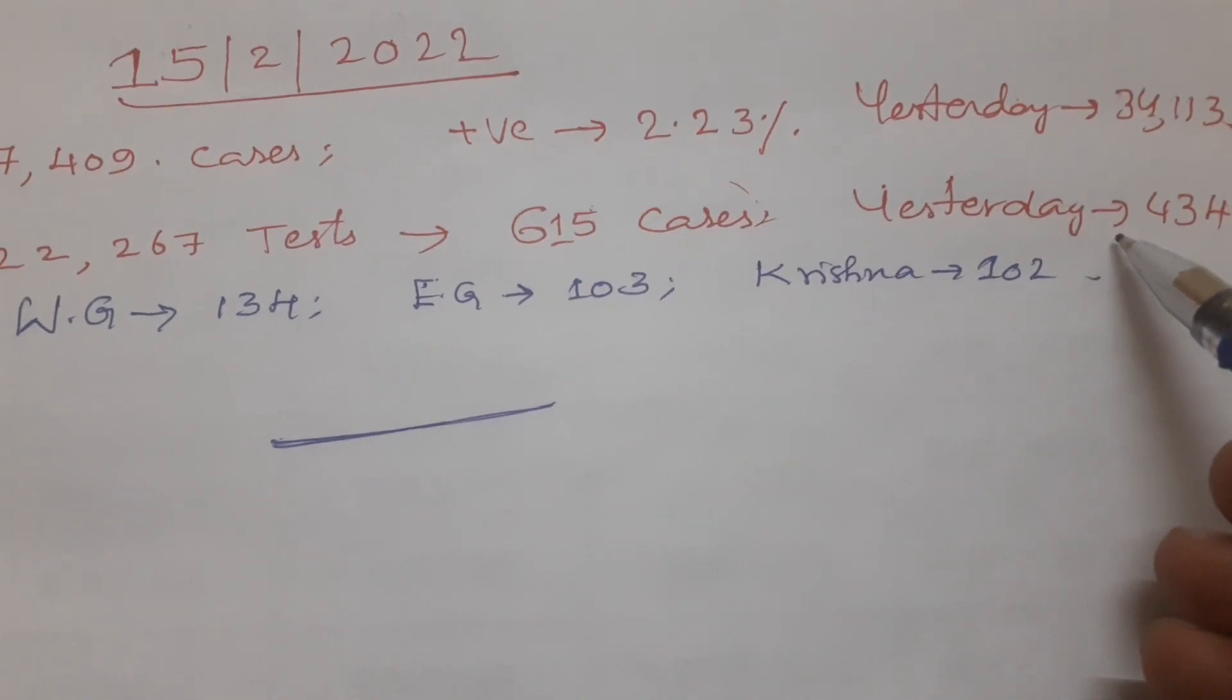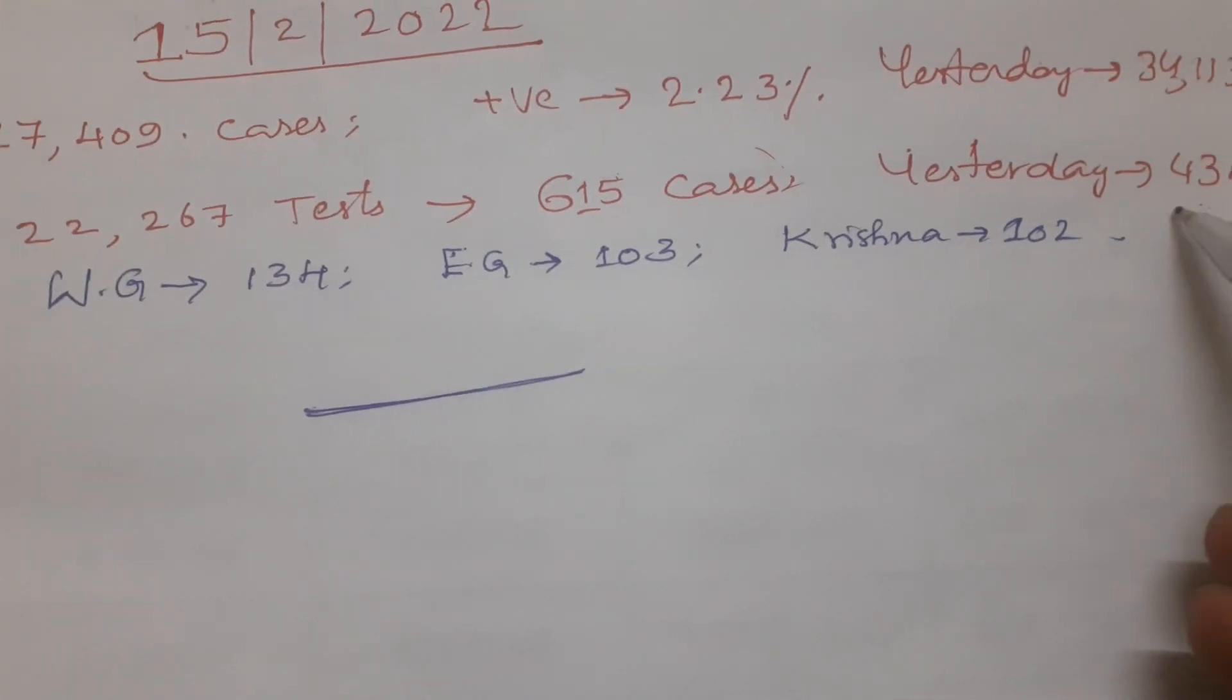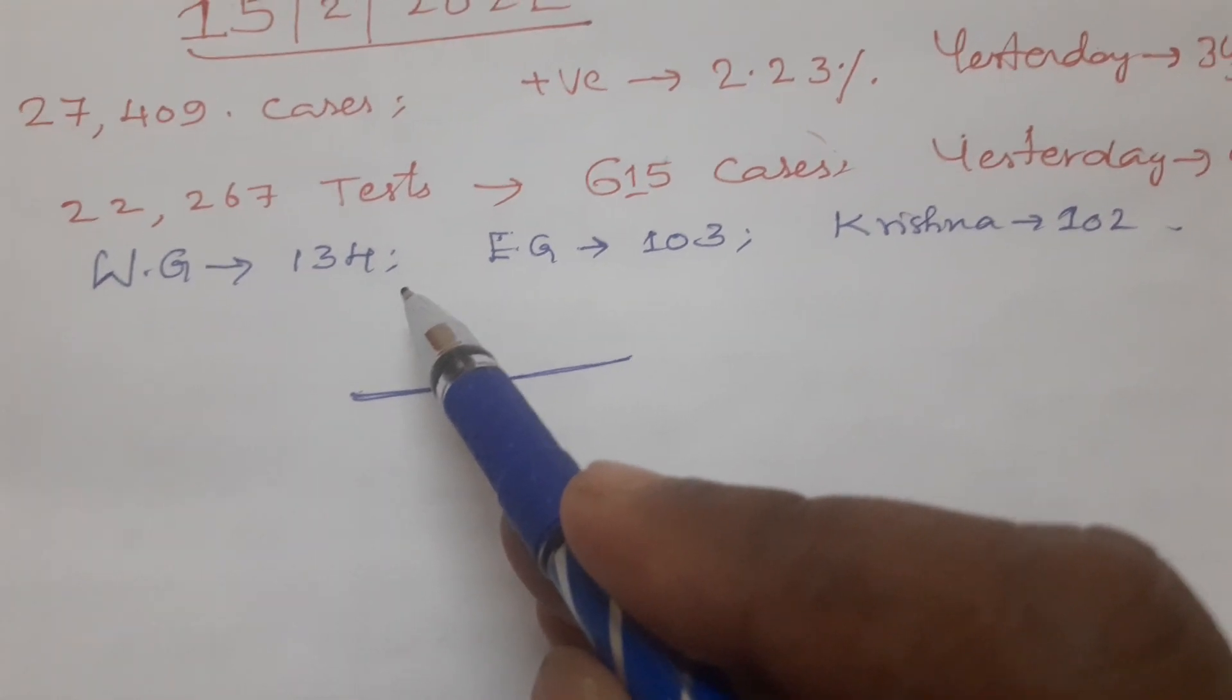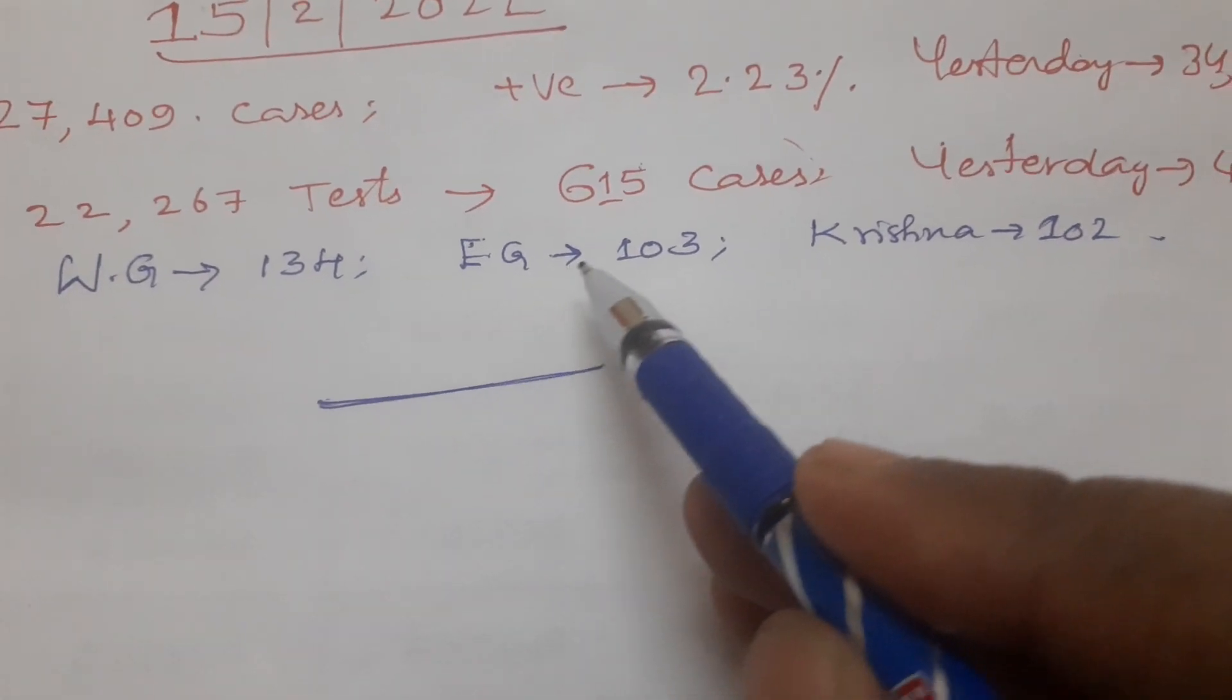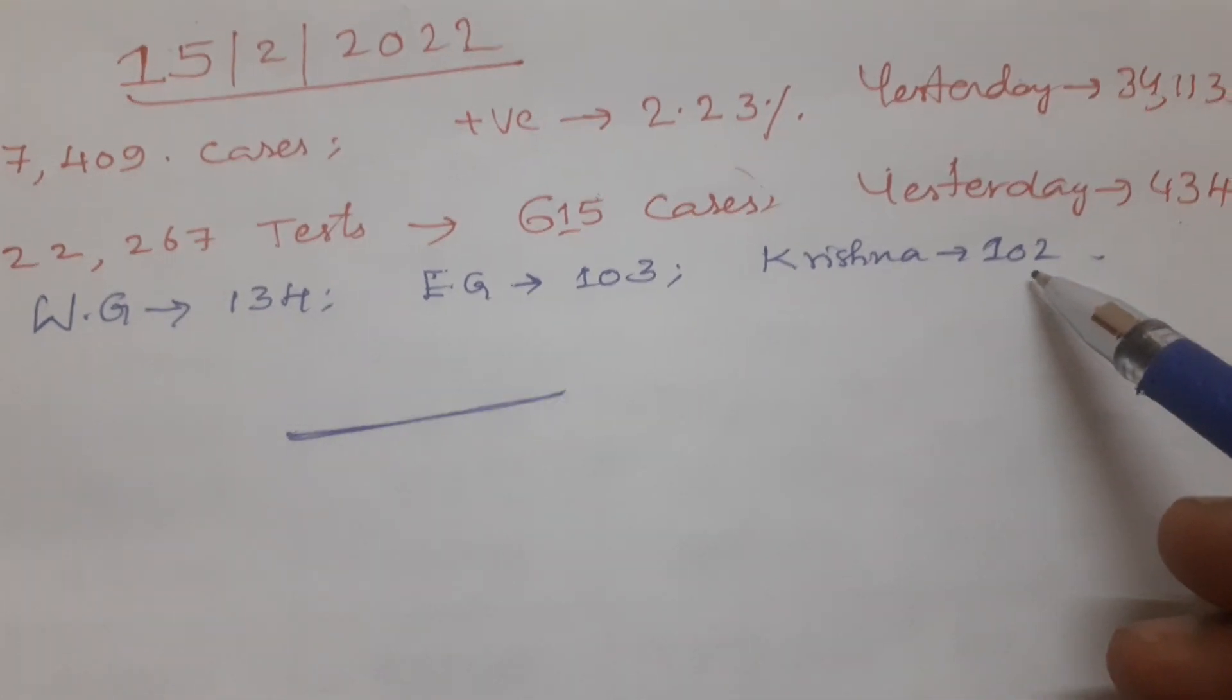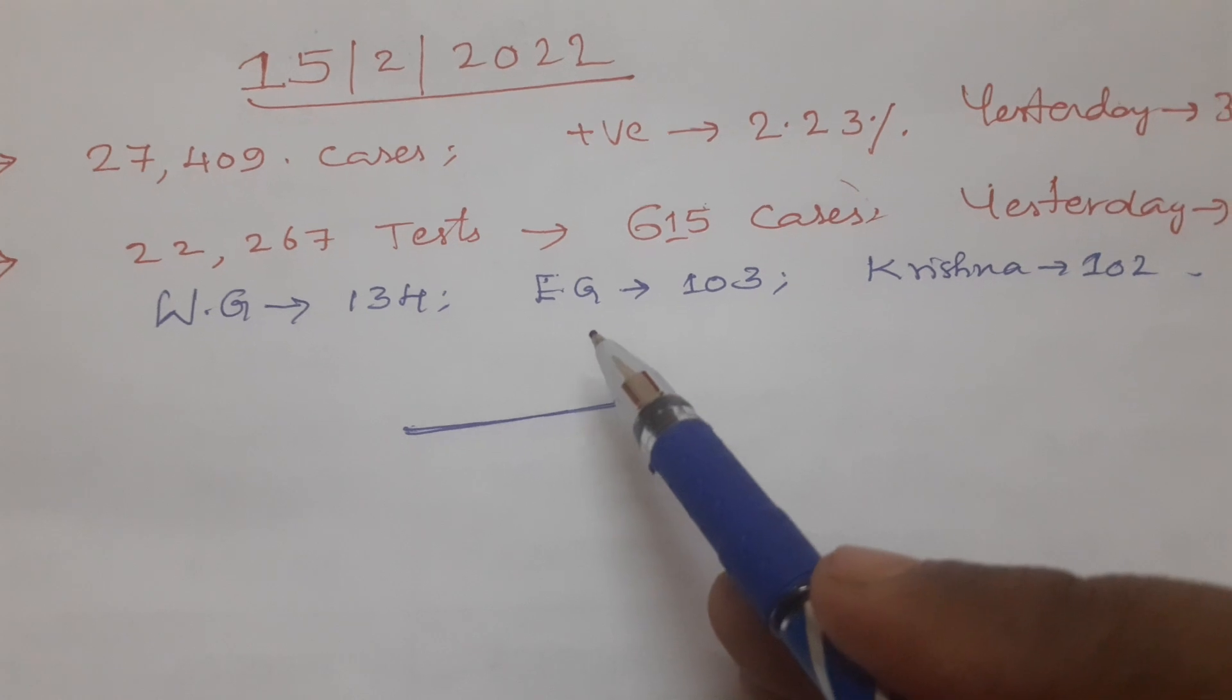Yesterday's figures were 434, so there's a bit of a hike in today's cases. West Godavari is first place with 134 cases, East Godavari 103, and Krishna 102 cases. This is the news about Andhra Pradesh.